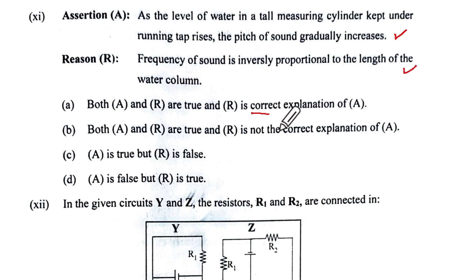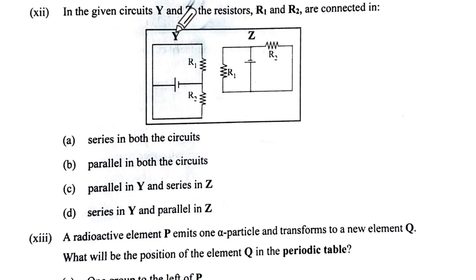In the given circuits Y and Z, R1 and R2 are connected. From the cell, the current is going in one path here and one path here, so it is in parallel. And here the cell, the current is going in one path here and one path here, so both of them are in parallel. Option is B.